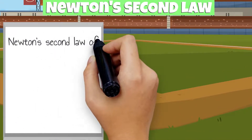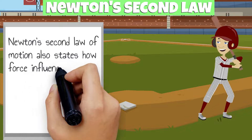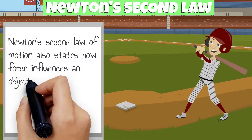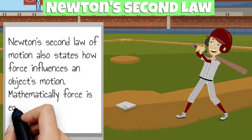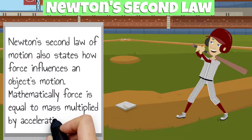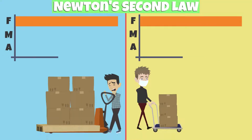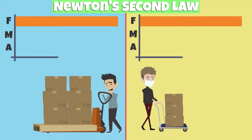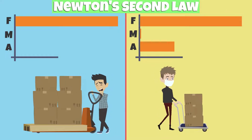Newton's second law of motion also states how force influences an object's motion. Mathematically, force is equal to mass multiplied by acceleration, or F is equal to M times A. When an equal force is applied on two objects, the acceleration will be greater for the object with less mass.